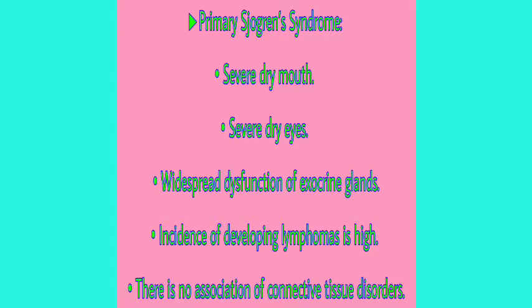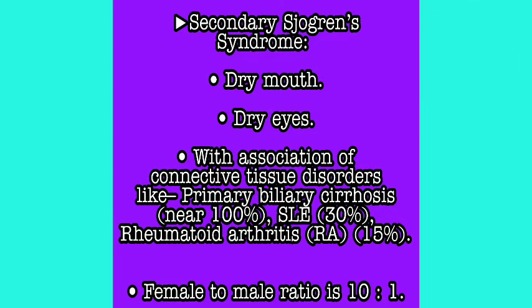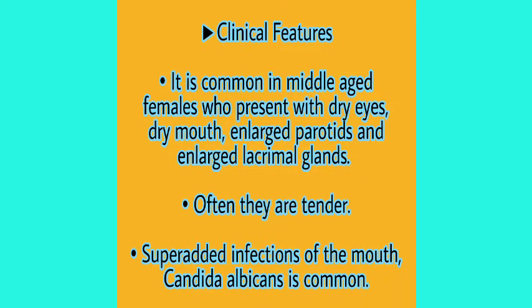Always remember: in primary Sjögren's syndrome there is no association with connective tissue disorders. In secondary Sjögren's syndrome, there is also dry mouth and dry eyes, but it is associated with connective tissue disorders — such as primary biliary cirrhosis (found in nearly 100% of cases), SLE (systemic lupus erythematosus, associated in 30% of cases), and rheumatoid arthritis (RA, in 15% of cases). The female-to-male ratio in secondary Sjögren's syndrome is 9:1.